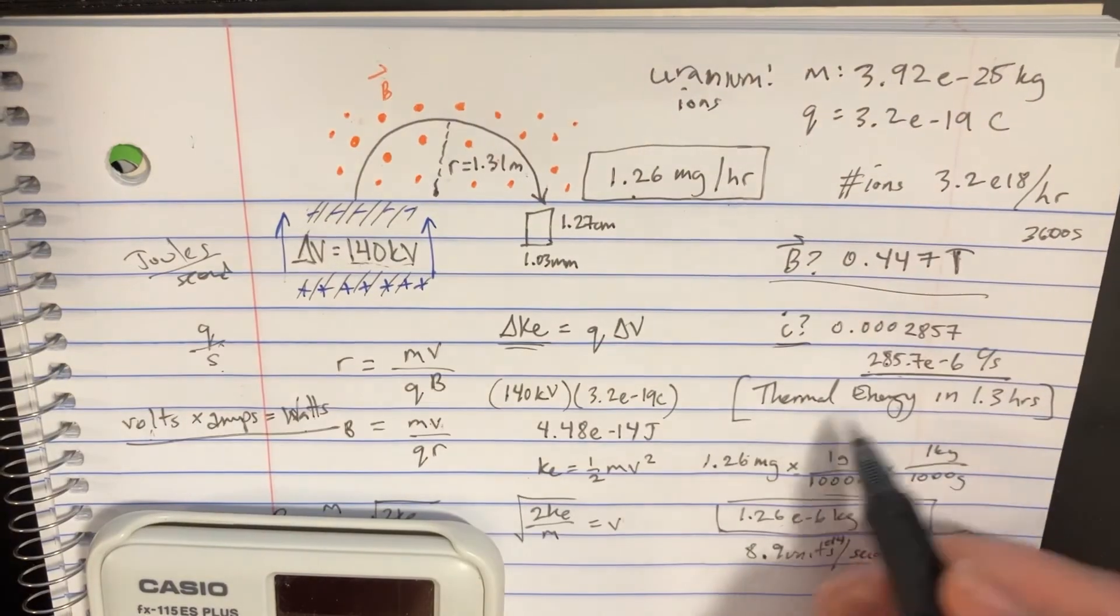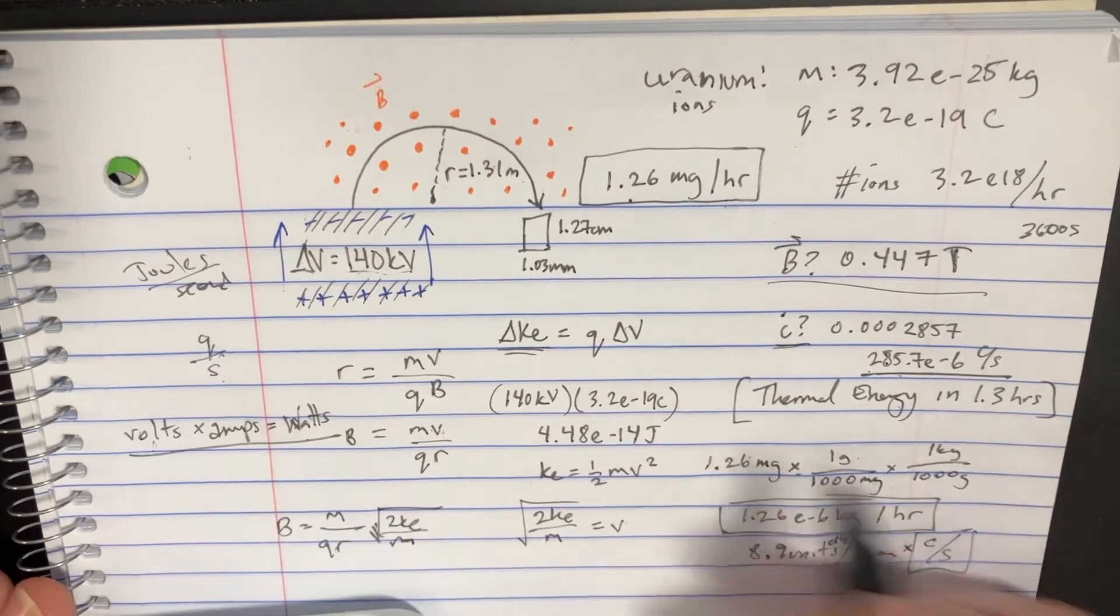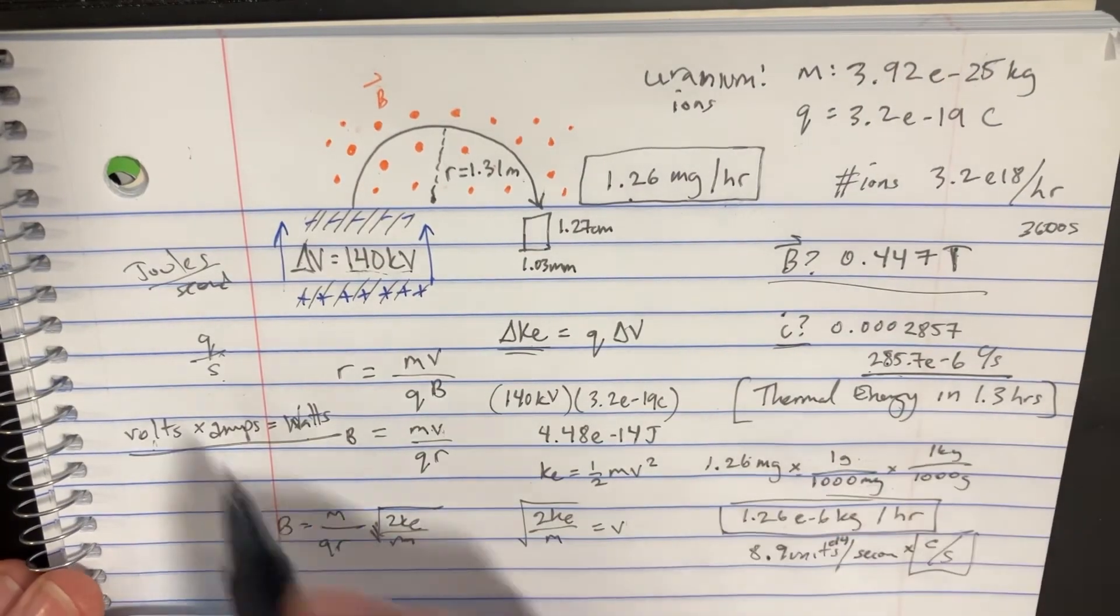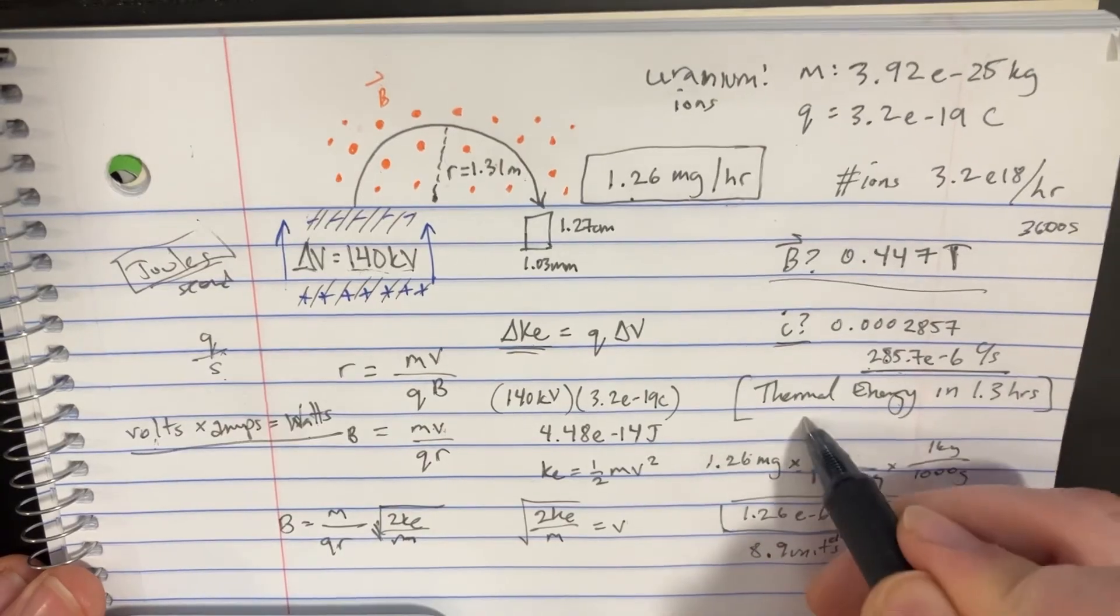We want to know how many joules of kinetic energy in that many hours. So we're going to have to take the wattage which is joules per second and multiply it by the seconds. We're going to be left with the joules remaining. That's how much energy it is. We're looking at joules here.